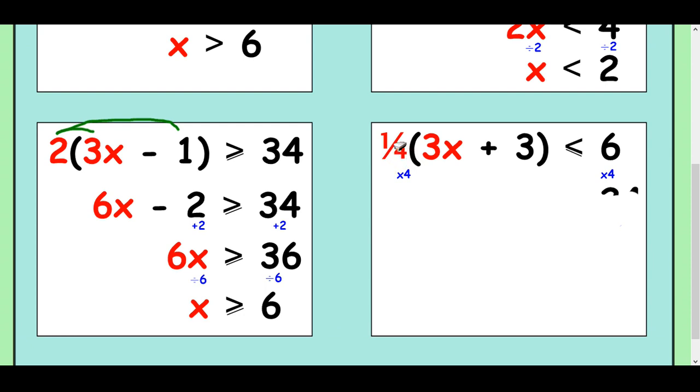So we only need to do it to the multiplier of the bracket. Okay, so that's going to give us a 1 there, which is essentially just leaving the bracket as it is. And on the other side, 4 times 6 is 24. Then it makes things much easier. So you can take away the 3 from both sides. You'll get 3x is less than or equal to 21 and then divide by 3 to finish off. x is less than or equal to 7.